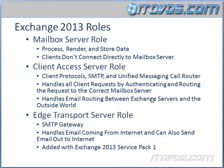Now in order for our Exchange environment to function properly, we need the Mailbox Server role and the Client Access Server role — those two are necessary. The Edge Transport Server role isn't necessary, but it's something we normally want to use. We could also use a third-party SMTP gateway that accepts the mail, does some virus or spam checking, and then sends it to our internal Client Access Server, which would then forward that email to the correct Mailbox Server.